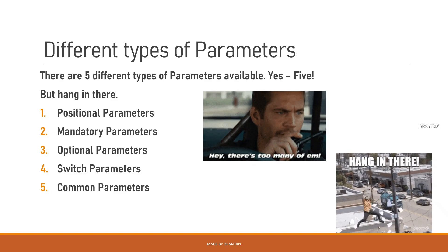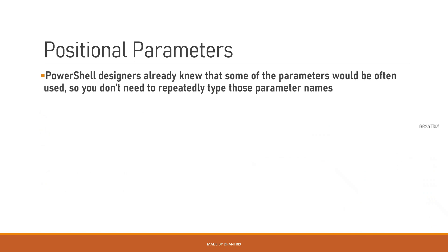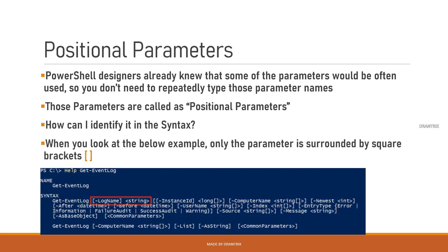The first one is positional parameters. PowerShell designers already knew that some parameters would be often used in certain cmdlets, so you don't need to repeatedly type those parameter names. Those are called positional parameters. To identify them in the syntax, let's look at the help for the Get-EventLog command.